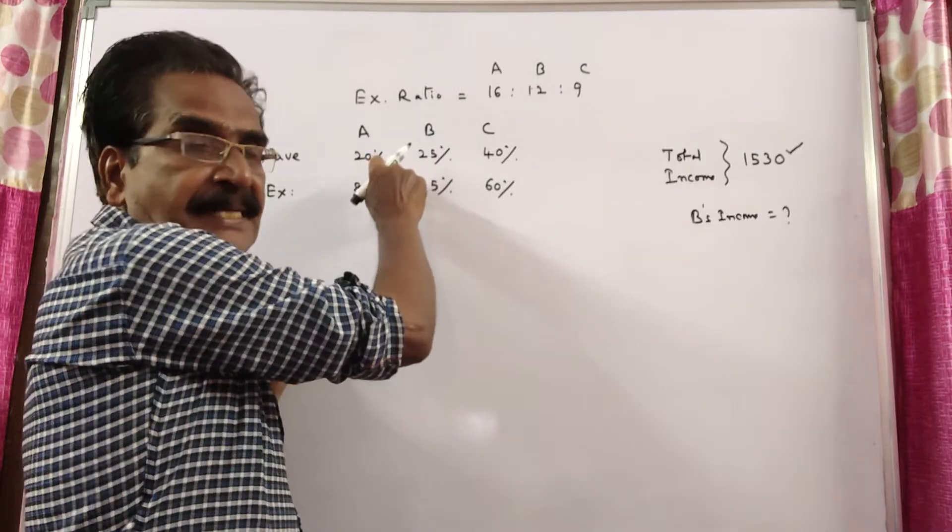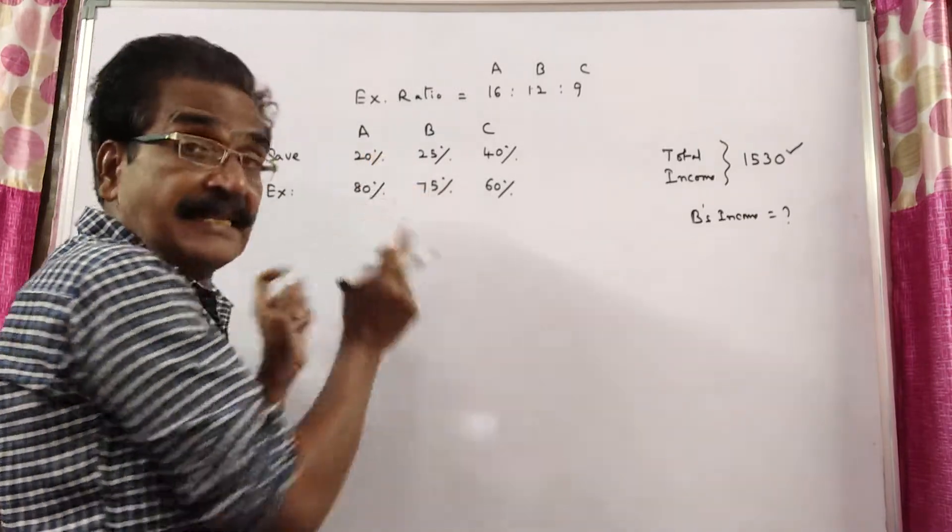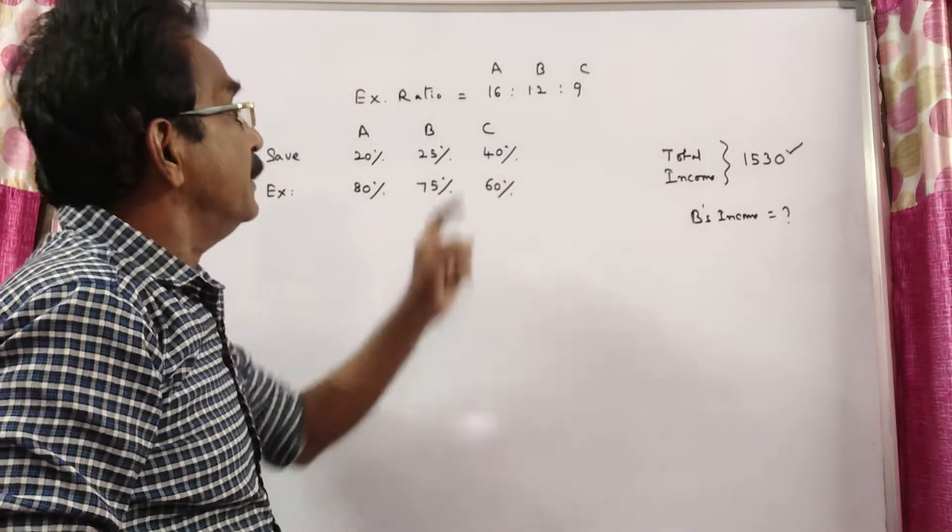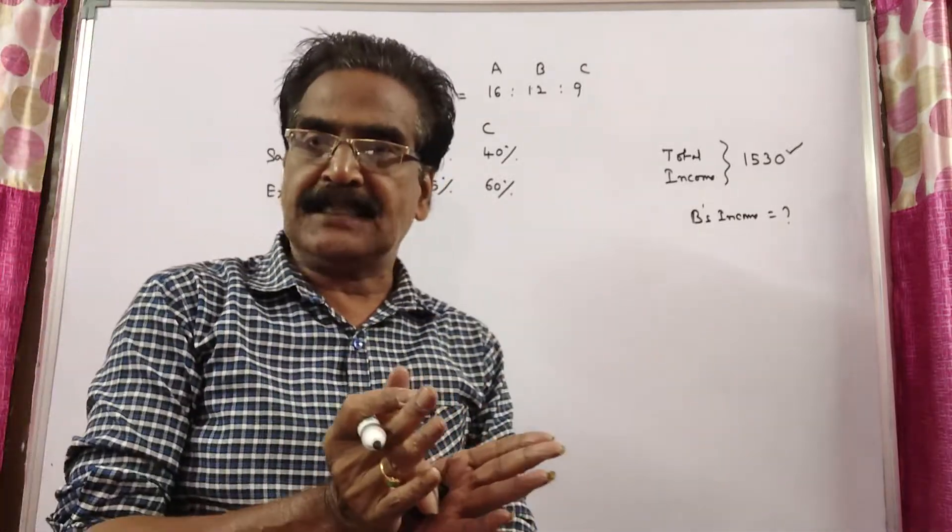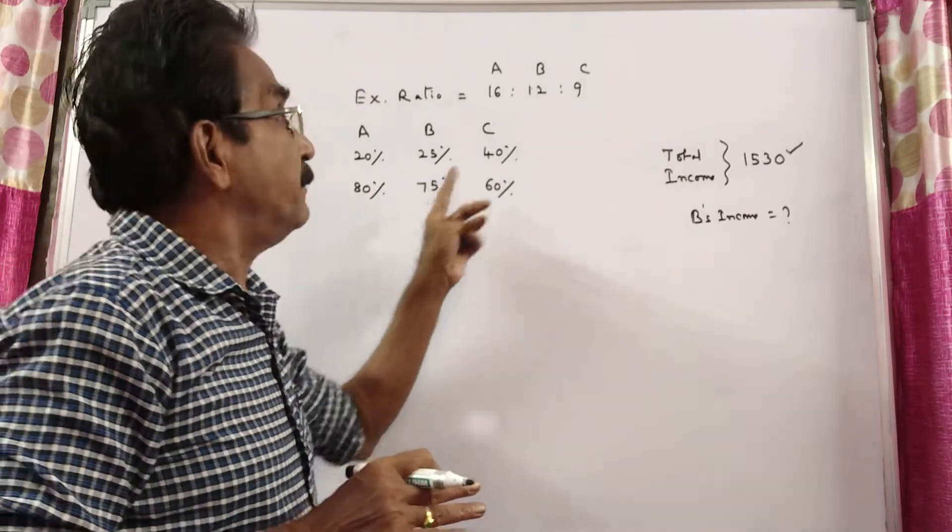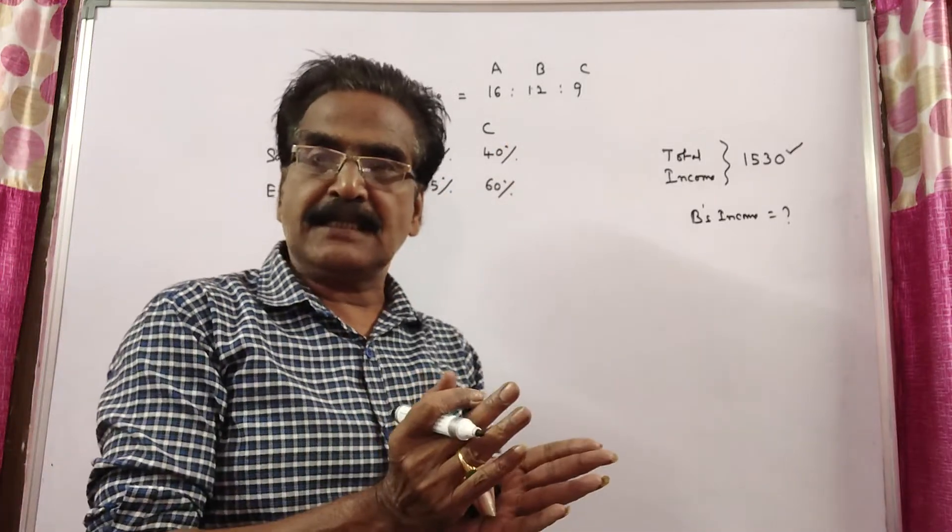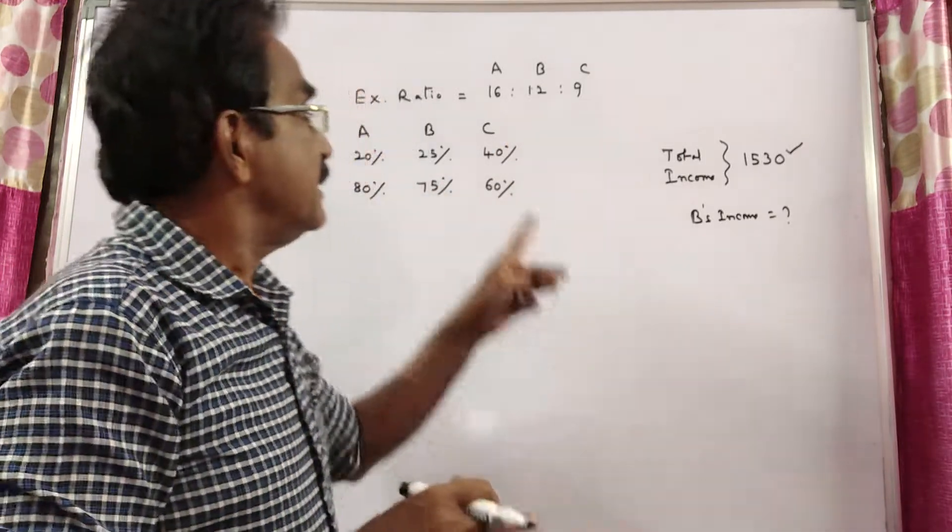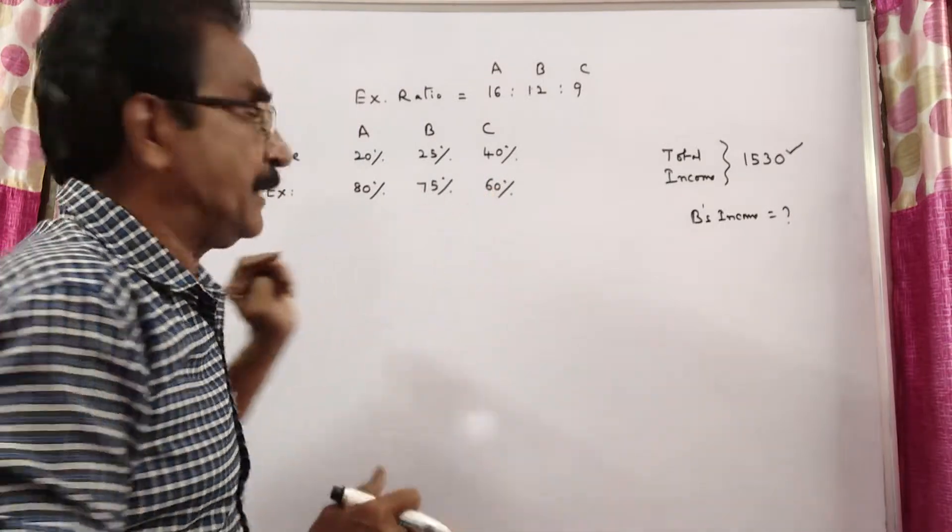A saves 20%, which means A spends 80% of his income. B saves 25%, which means B spends 75% of his income. C saves 40%, which means C spends 60% of his income.